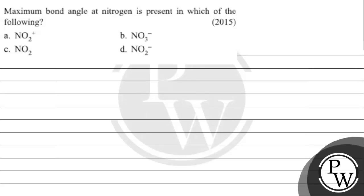Let's read this question. The question says: maximum bond angle of nitrogen is present in which of the following? Option A: NO2+, Option B: NO3-, Option C: NO2, and Option D: NO2-.